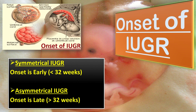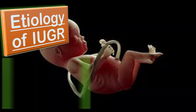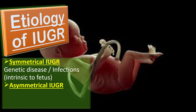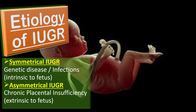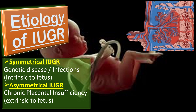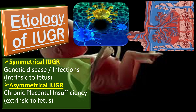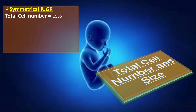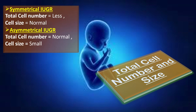The etiology of symmetrical IUGR includes factors intrinsic to the fetus, such as genetic diseases and infections. In asymmetrical IUGR, extrinsic factors are involved, like chronic placental insufficiency. In symmetrical IUGR, the total cell number is less but cell size is normal. In asymmetrical IUGR, the total cell number is normal but cell size is small.